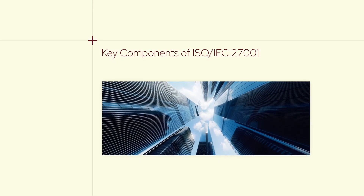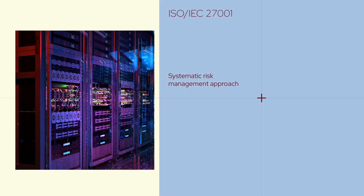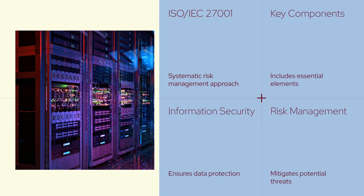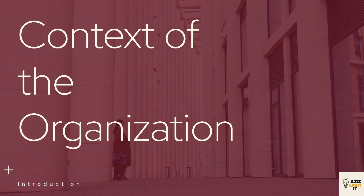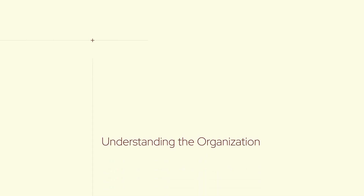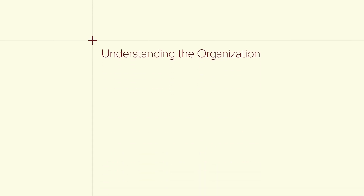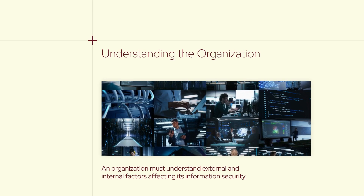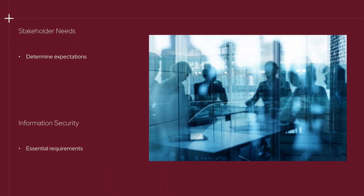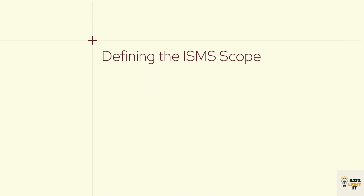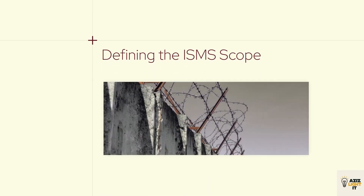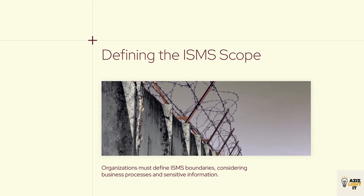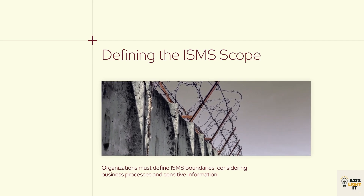Key Components of ISO IEC 27001. ISO IEC 27001 follows a systematic approach to risk management and information security, including the following key components. First, context of the organization: an organization must first understand the external and internal factors that can affect its information security. It is essential to determine the needs and expectations of stakeholders. Organizations must also define the boundaries of their ISMS, taking into consideration business processes, locations, and the scope of sensitive information.